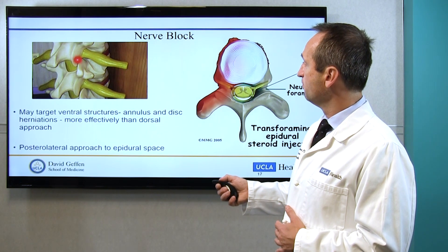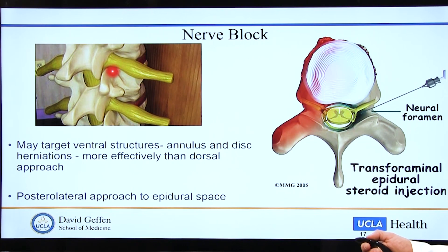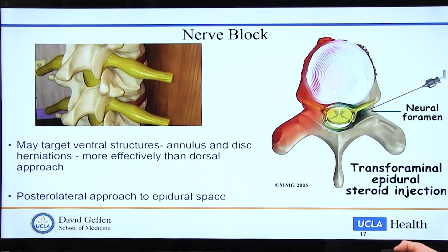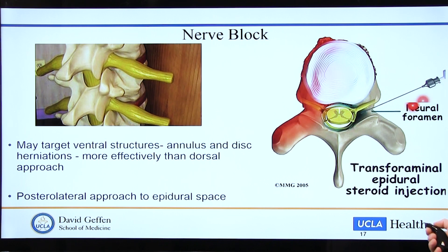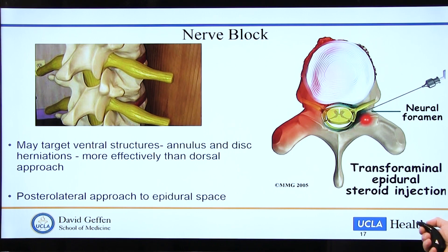This disc pressing on the nerve is our target — this is where we go with the needle and inject. That is what we call a nerve block. It's a model showing the spinal column and the nerves coming out — you can exactly imagine how we come very close to the nerve, not into the nerve, and we see the nerve, so that's where we inject. We may target ventral structures — meaning from the front — more effectively than the dorsal approach from the back. Here is an example of the picture of how we go to that foramen, where it is tight because the disc comes out, and we inject there.